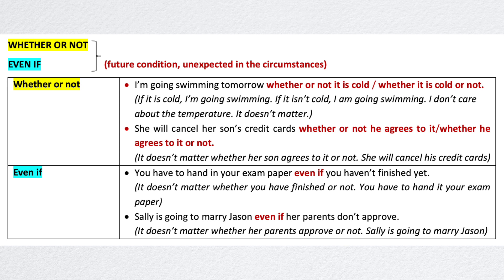Similarly: 'You have to hand in your exam paper even if you haven't finished yet.' This means it doesn't matter whether you have finished or not — you have to hand in your exam paper. And: 'Sally is going to marry Jason even if her parents don't approve.' Again, it doesn't matter whether her parents approve or not — Sally is going to marry Jason.